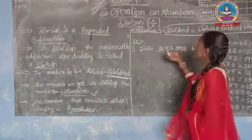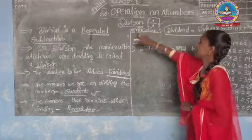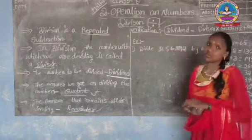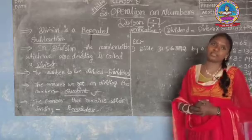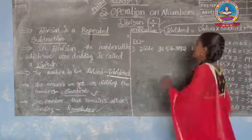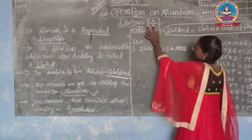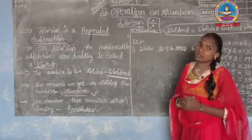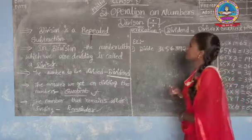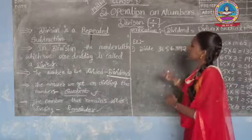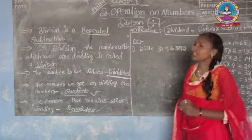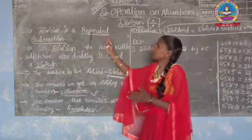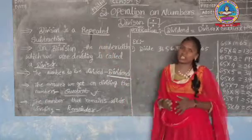This is the sign of division, and it can be read as 'divided by'. What is division? The division is repeated subtraction.